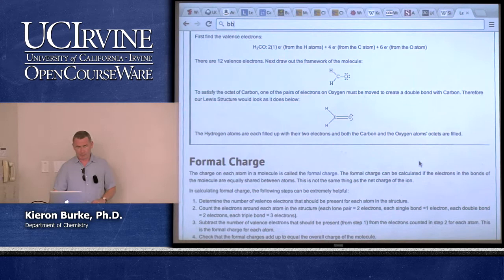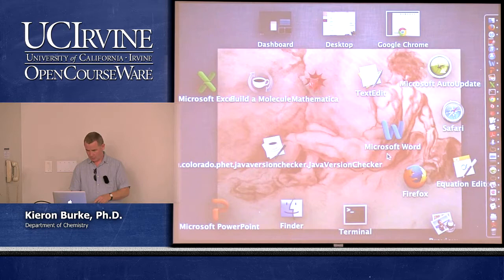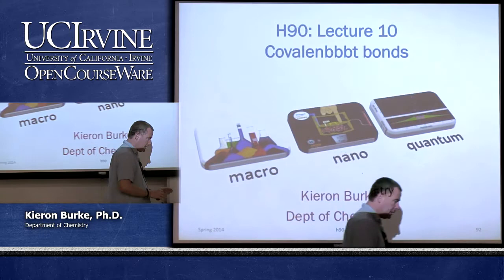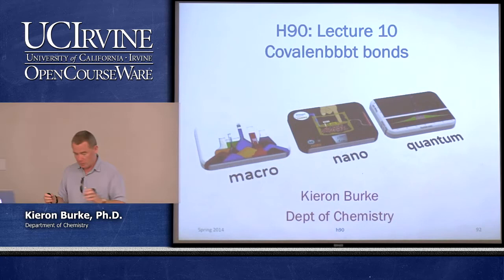We will be going over all the stuff for the midterm when the time comes the following week. This week is all about bonding, and we're going to learn how to go from knowing about the number of valence electrons for an atom to how that determines Lewis structures.